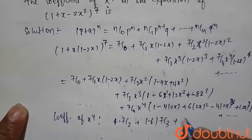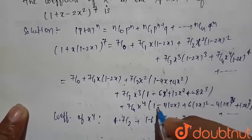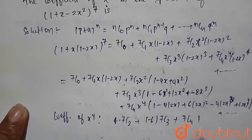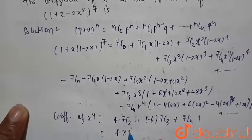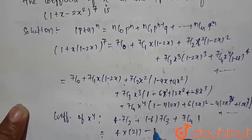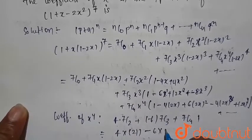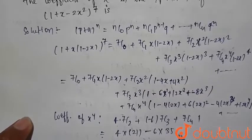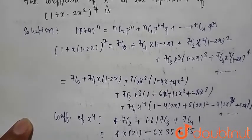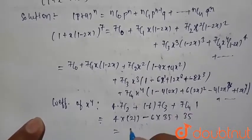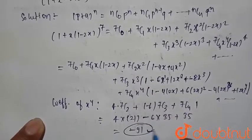And the last term 7C4 is multiplied with 1. So this is equal to 4 into 7C2, which is equal to 21, and minus 6 is multiplied with 7C3, that is equal to 35, and 7C4, this is equal to 35. On solving this, we can write this is equal to minus 91.